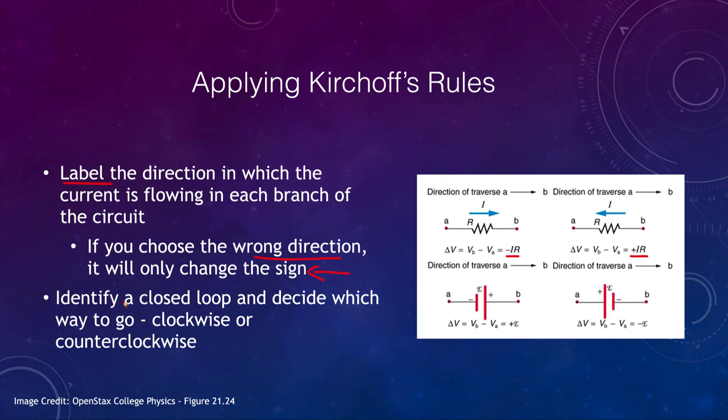And you want to identify any closed loop and decide which way to go. So are you going to go around the loop clockwise, or are you going to go around that loop counterclockwise? And either one again will work fine, you just have to keep track of what you're doing there. And again, the worst thing it will do is change the sign for you.